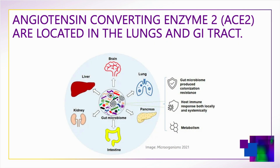COVID-19 enters the host through the angiotensin converting enzyme 2, or ACE2 receptor. These ACE2 receptors are located in the lungs and the GI tract. ACE2 is highly expressed in alveolar cells in the lung and in the cells of the GI tract, including the small and large intestines. Enterocytes of the small bowel are the cells that contain the highest amount of ACE2 receptors in the human body.